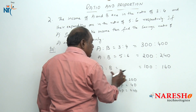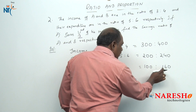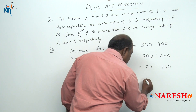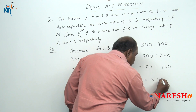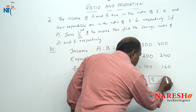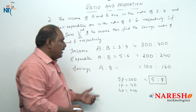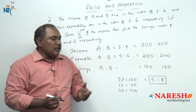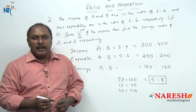The savings ratio of A and B is 100 is to 160, which simplifies to 5 is to 8. The savings ratio of A and B is 5 is to 8. This is how you can solve this problem quickly.